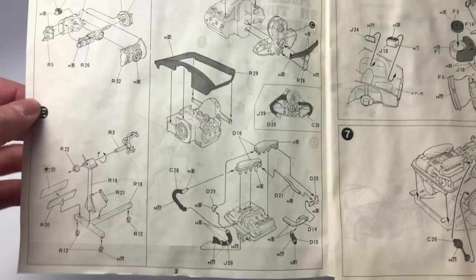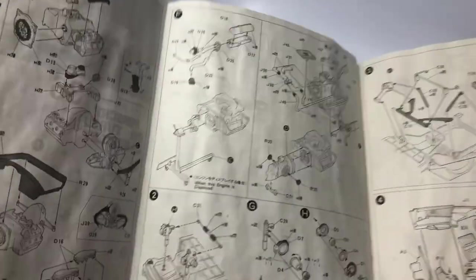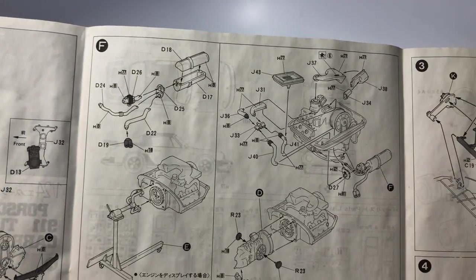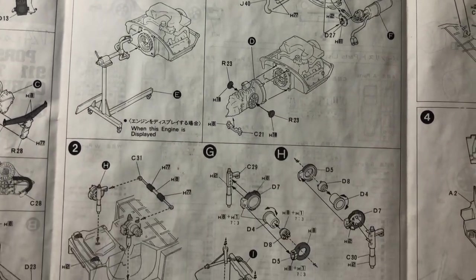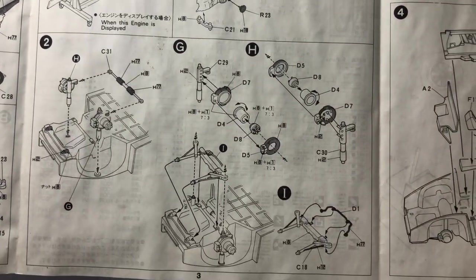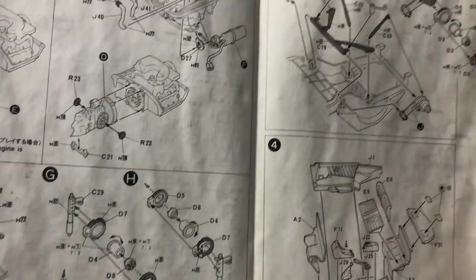Step E caught me off guard as it is an engine mount. The engine can be built for display purposes or can be installed in the rear engine bay to make a kit a non-curbside. Pretty cool, right?